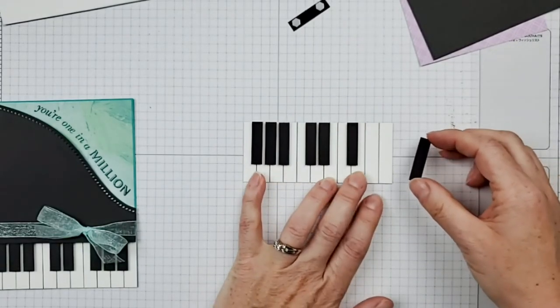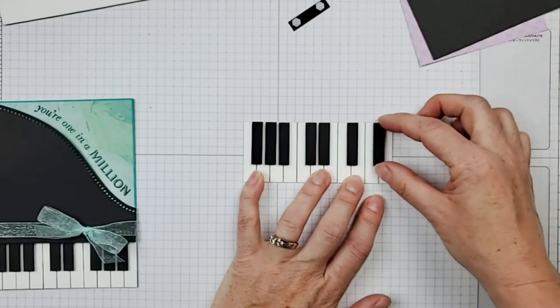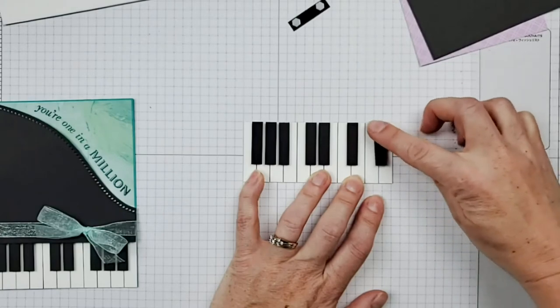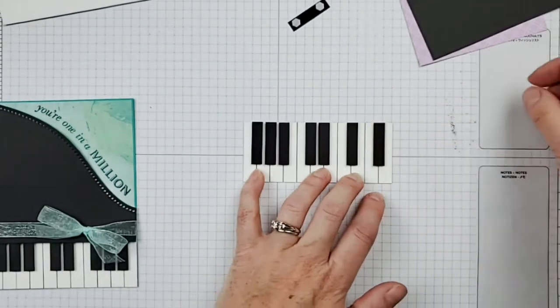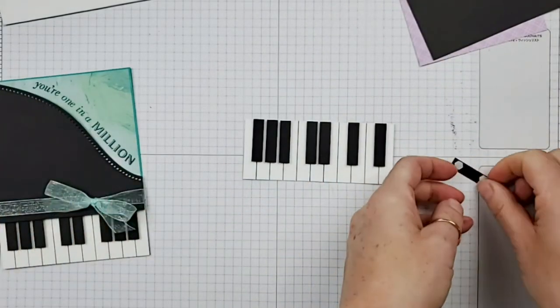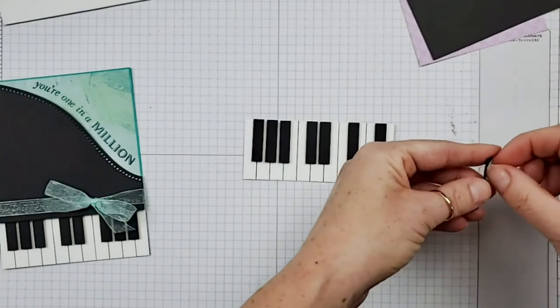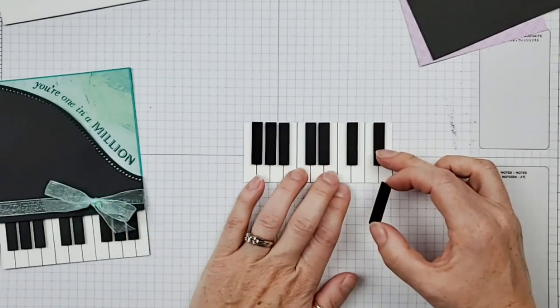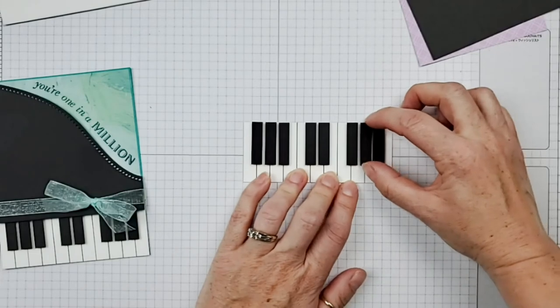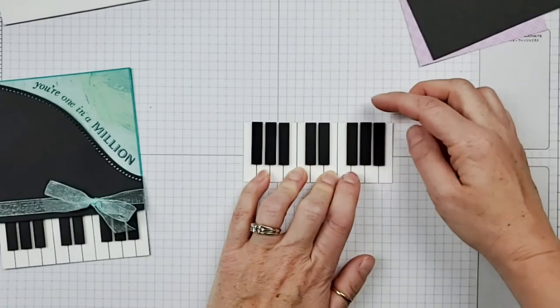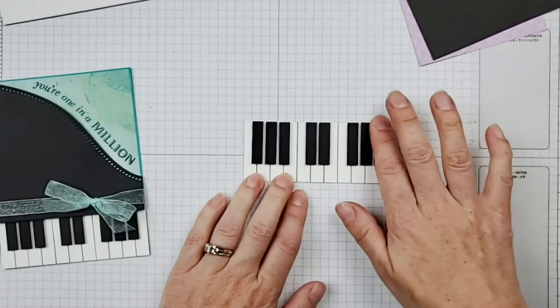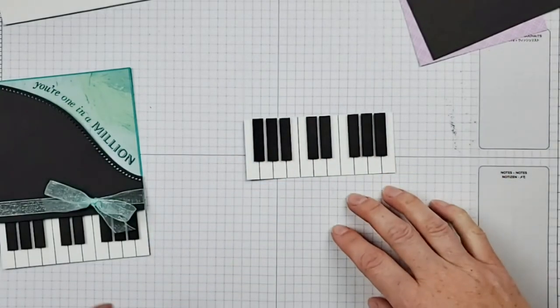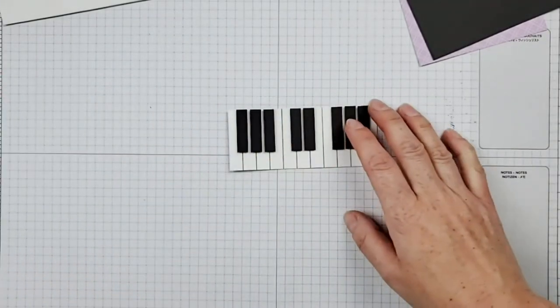So having the keys, the black keys on dimensionals just adds to the effect of the whole keyboard. Okay, we've got three, two. We need three over here. We're almost done our keys and this is the most involved part. Thanks Cindy. The ribbon. Actually, I'm not using that ribbon for this one. I'm going to use a different ribbon.